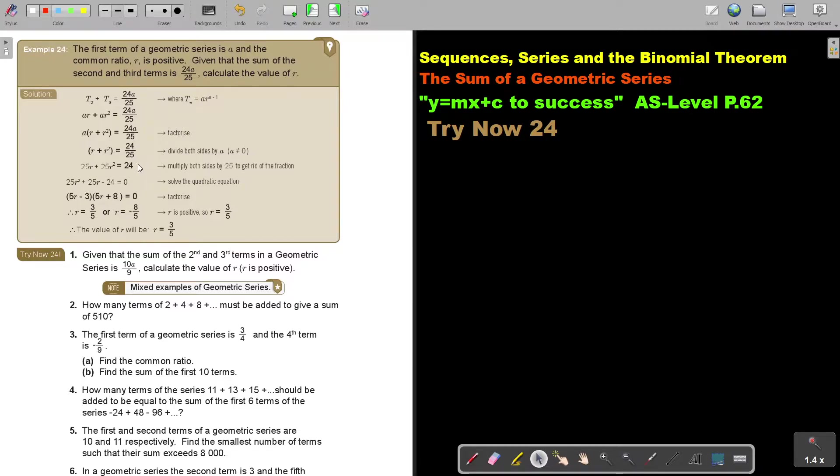So multiply both sides by 25, just cross multiply and then I'm getting this. Then solve the quadratic. As soon as you see quadratic, take everything over.